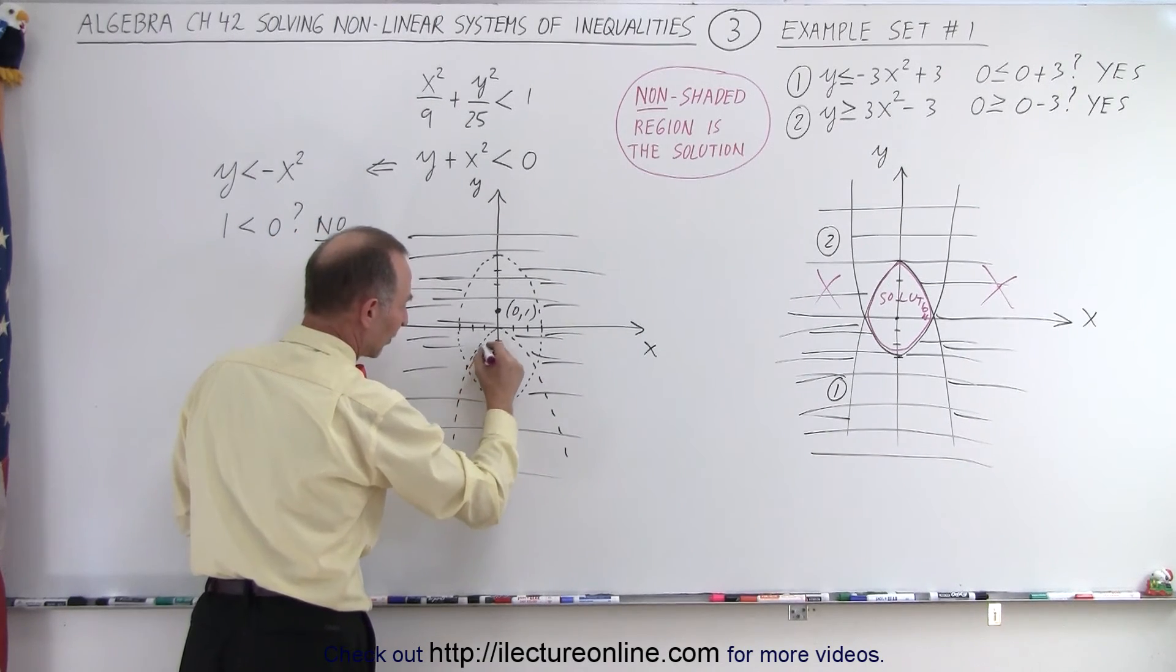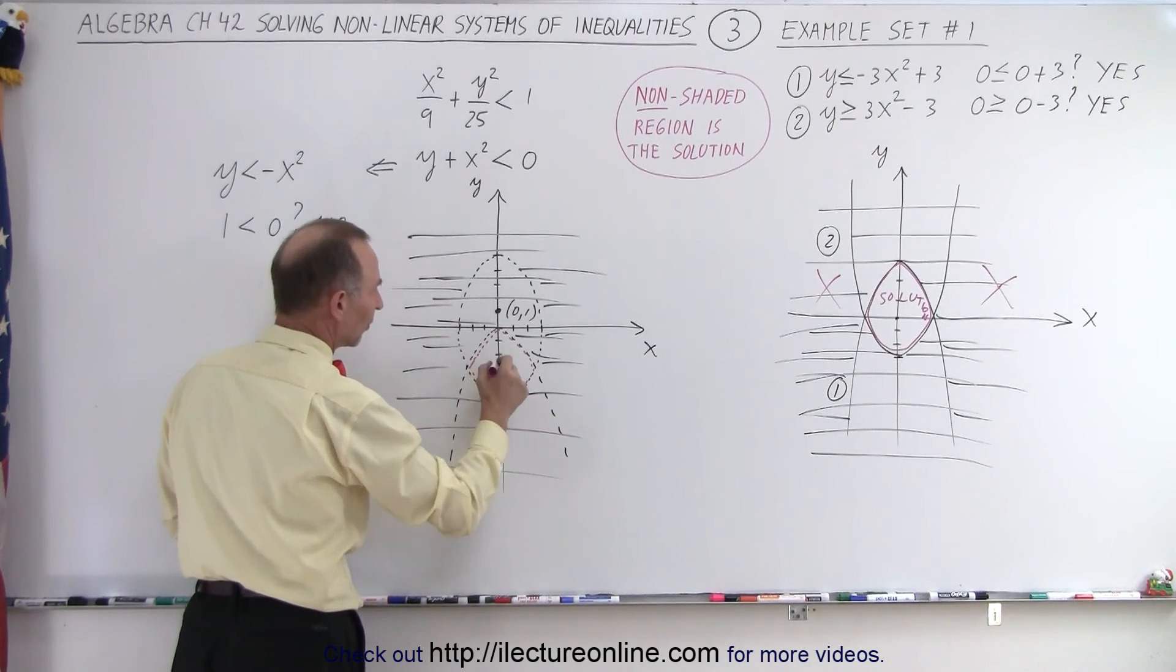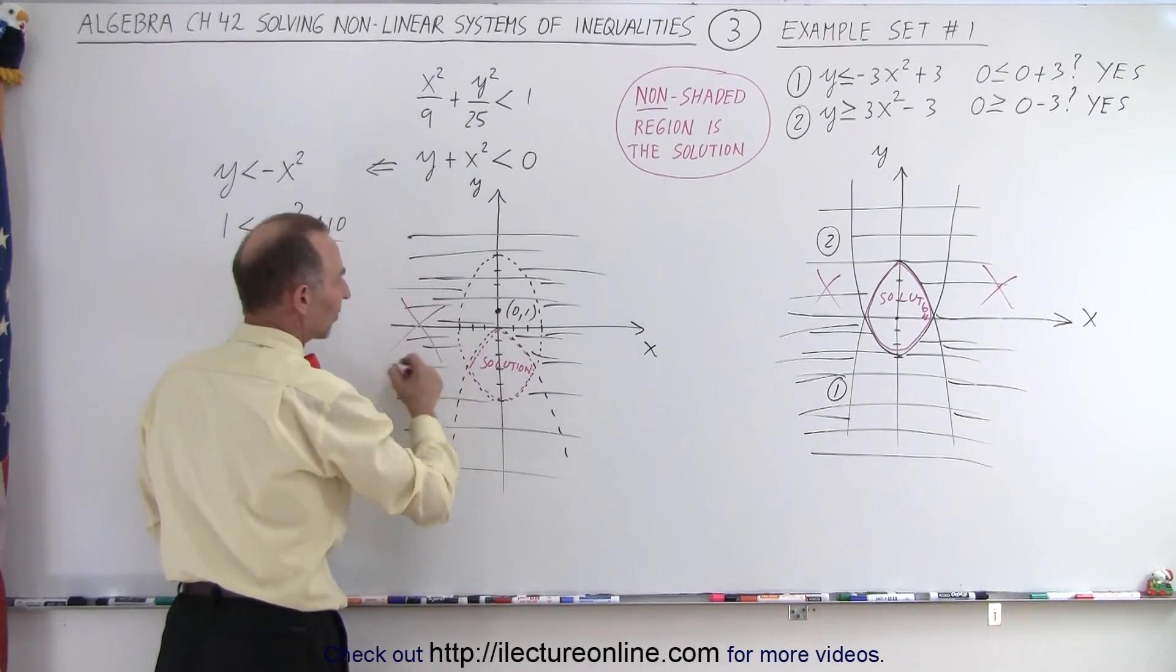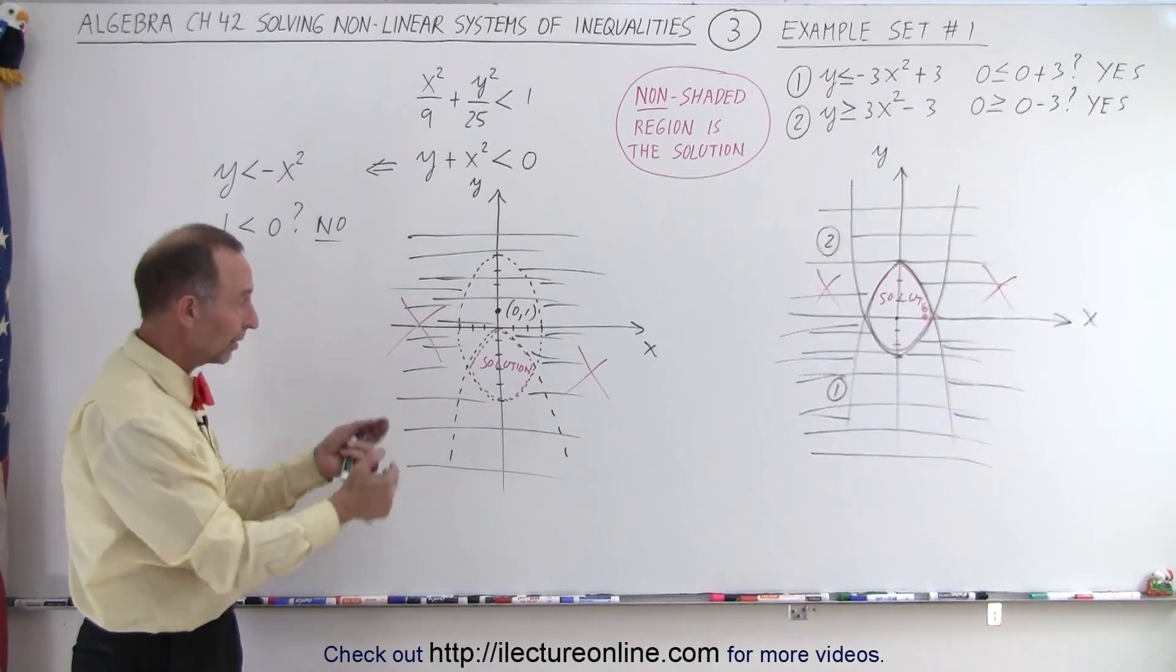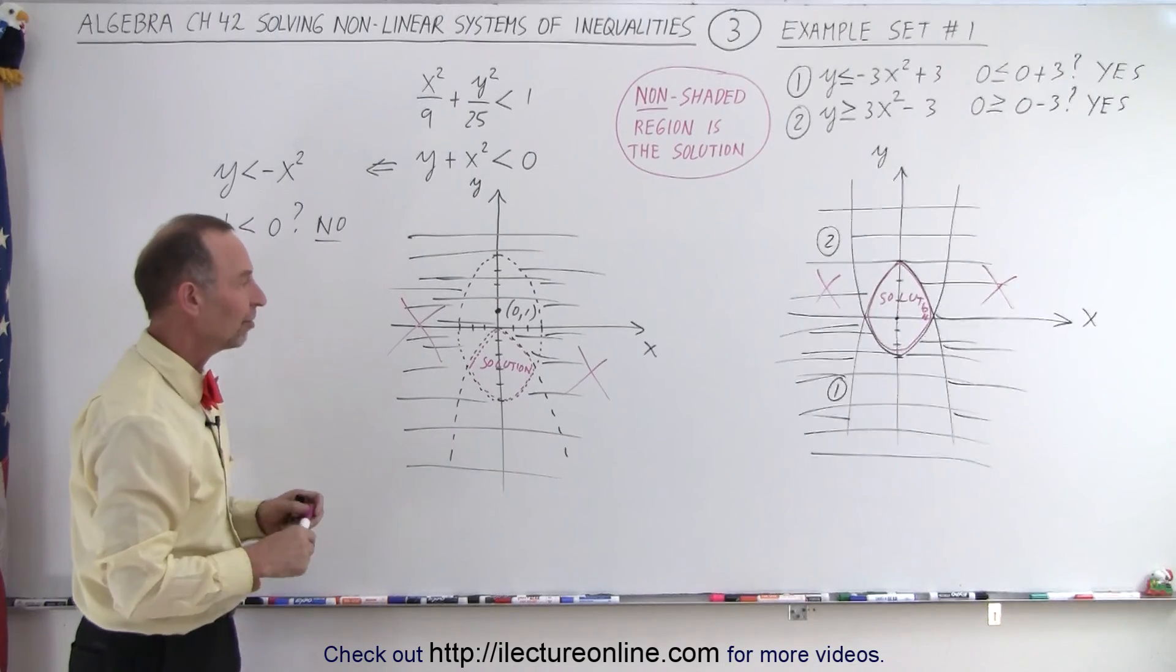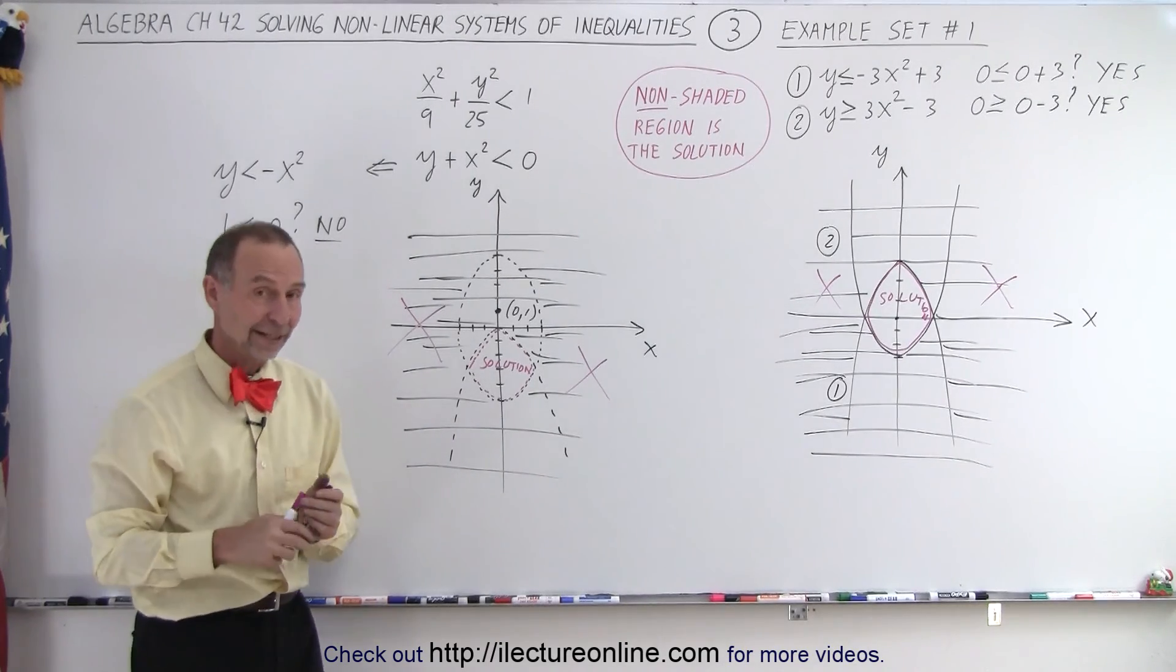And of course I need to use a dashed line because it doesn't include the boundary. So this is the solution, and outside is not part of the solution. So it's not a bad idea that when you're all done, that you actually write in the region: this is the solution. That's the portion that satisfies both inequalities at the same time. So that is how it's done.